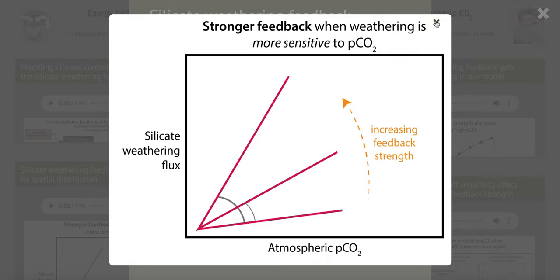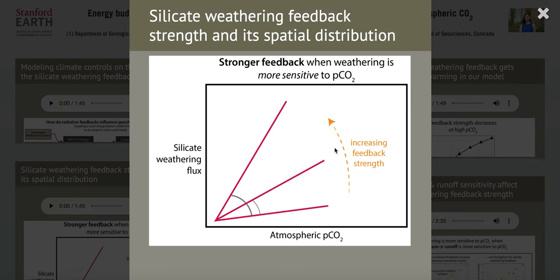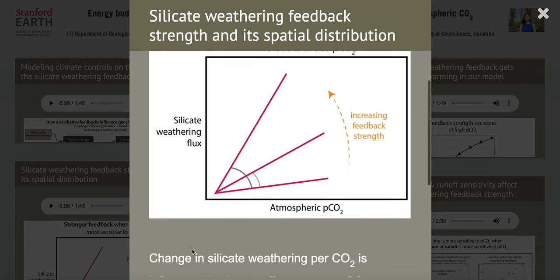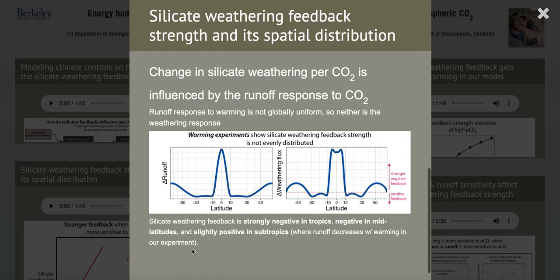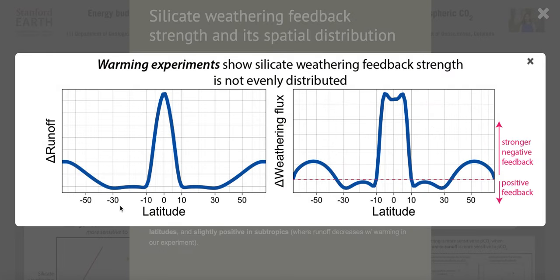The utility of our modeling approach is that we can look at how silicate weathering fluxes respond to CO2 over space, effectively mapping out the strength of the silicate weathering feedback spatially. On the bottom, we're doing a warming experiment where we simply double CO2 and look at the change in runoff and the change in weathering fluxes. The change in runoff is highest and positive in the tropics, suggesting increases in runoff are strongest there. The strength of the silicate weathering feedback is also highest in the tropics.